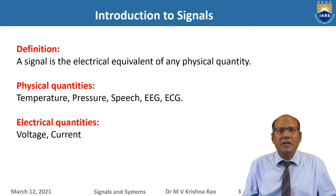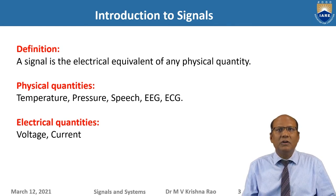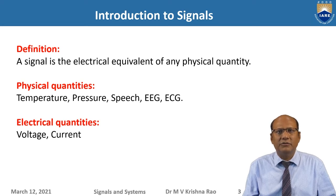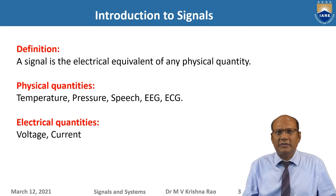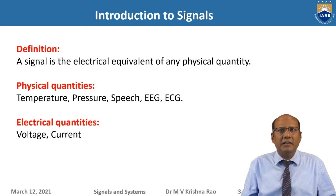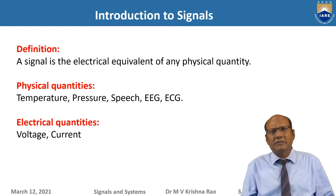Basically here the physical parameter is temperature. Another parameter can be pressure. If you want to measure the pressure at a certain point in the atmosphere, the same thing — you can use a barometer. Digital barometers are available, so pressure also you can sense. Another physical quantity could be similar to pressure, but it is an extension of pressure.